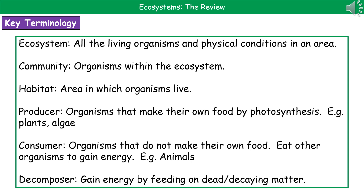A producer is an organism that can make their own food by photosynthesis — good examples are plants and algae. A consumer is an organism that can't make their own food, so in order to get energy they've got to eat other organisms — that's any animal you can think of really.